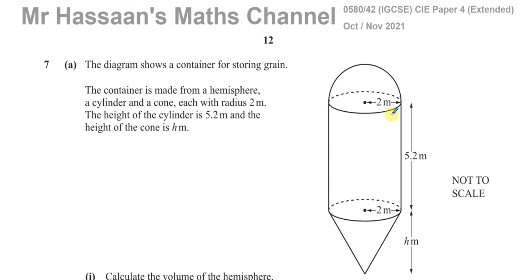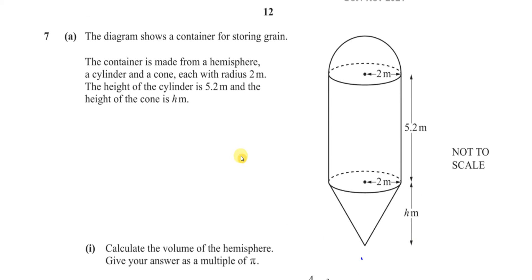The question shows a diagram of a container for storing grain. The container is made from a hemisphere at the top, a cylinder in the middle, and a cone at the bottom, each with radius two meters. The height of the cylinder is 5.2 meters and the height of the cone is unknown — called h meters.